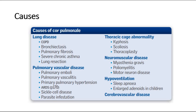These are some of the causes of cor pulmonale, which can be divided into a few categories: lung diseases, pulmonary vascular disease, thoracic cage abnormality, neuromuscular disease, hypoventilation, and also cerebrovascular disease.